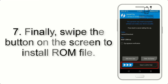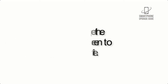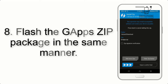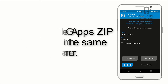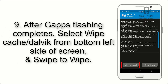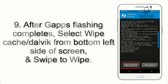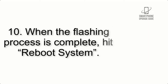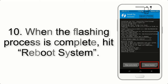Step 7: Swipe the button on the screen to install the ROM file. Step 8: Flash the GApps zip package in the same manner. Step 9: After GApps flashing completes, select Wipe Cache and Dalvik from the bottom left side of the screen and swipe to wipe.